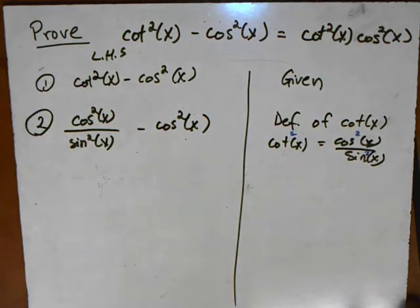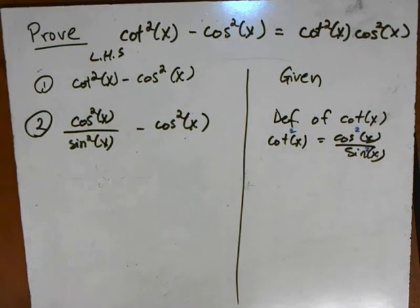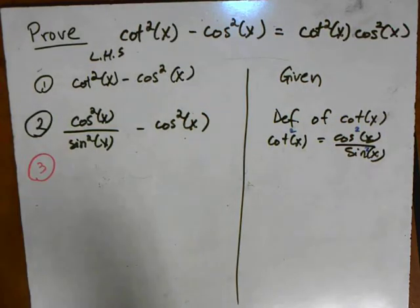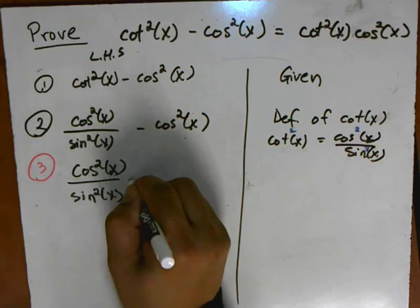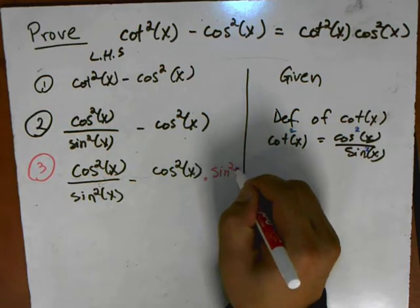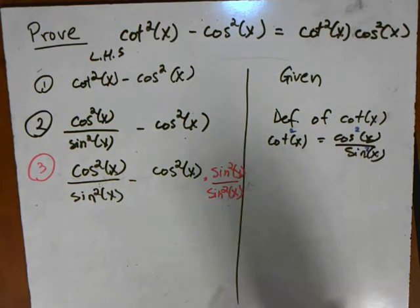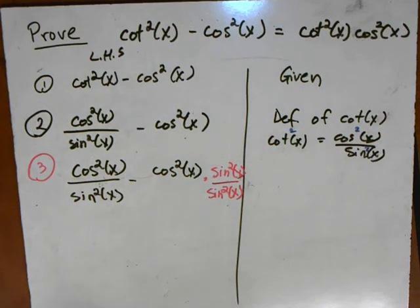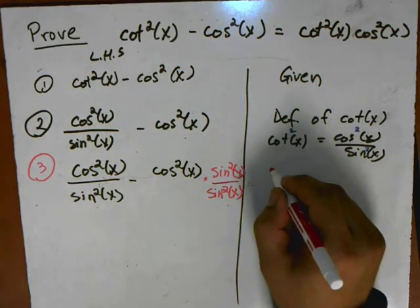Here's one of the key parts of the proof: to somehow combine these two terms together. I have a fraction and a regular term, so I'm going to find a common denominator. That's really the key strategy in this particular proof — to use the same denominator. The common denominator in this case is sine squared x. So I have cosine squared, and I'm going to multiply that by sine squared over sine squared.